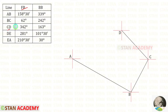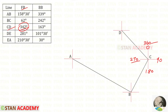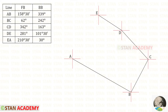The fore bearing of CD is 342 degrees. We know that here we have 0, here 90, here 180, here 270, and finally here 360. Since 342 comes between 270 and 360, we draw a line in between, then draw the direction symbol. The fore bearing of DE is given as 281 degrees, which also lies between 270 and 360, so we draw a line in between and then the direction symbol.